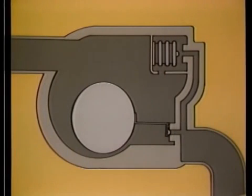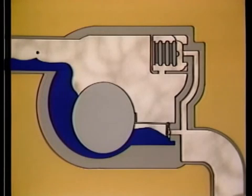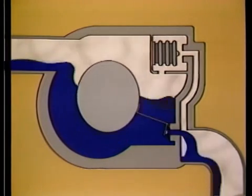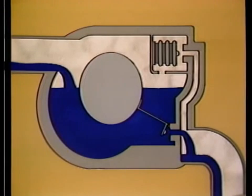At startup, the float is down, the float valve closed, and the thermostatic valve wide open. Non-condensible gases reaching the trap are immediately vented through the thermostatic valve at the top of the trap. Condensate collects at the bottom of the trap until the float begins to rise, opening the float valve. The float valve normally drains continuously from this point.